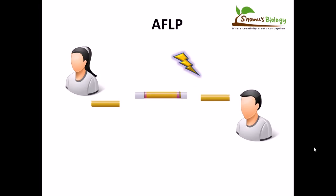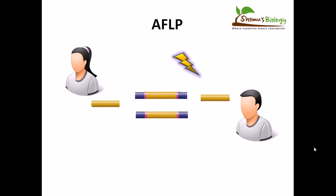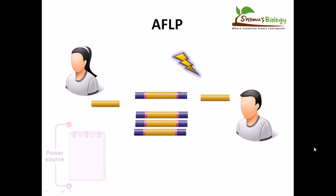After cutting it, we attach the DNA adapter — we ligate the adapter at both ends. After the ligation of the adapters, we will amplify those fragments via the polymerase chain reaction or PCR process. After this amplification, we take those amplified DNA fragments and load them in agarose gel.